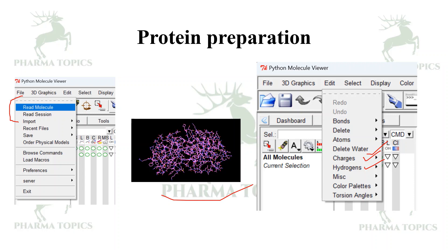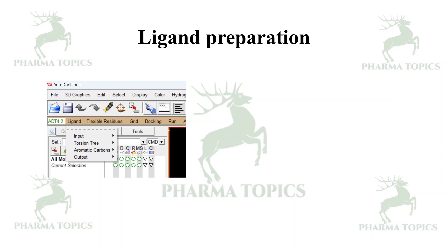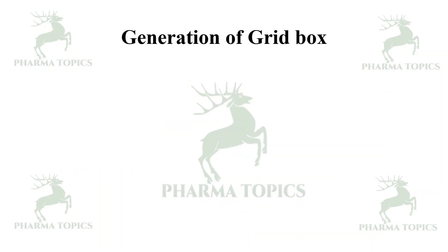For ligand preparation, there is a separate option in AutoDock where you can input the ligand, generate torsions, add charges, and create the output file. The output file for both the protein and the ligand will be in PDBQT format.